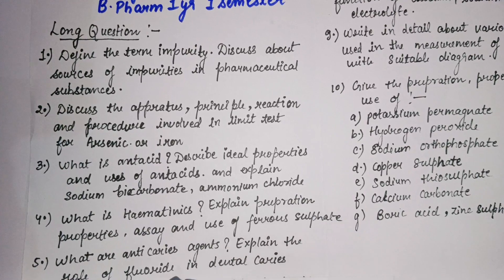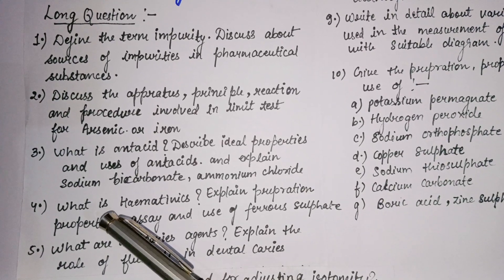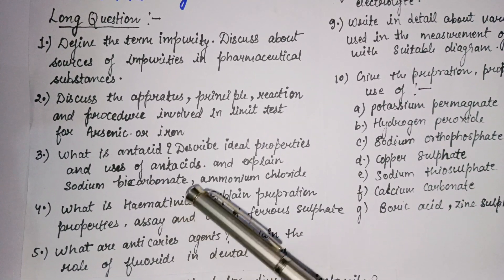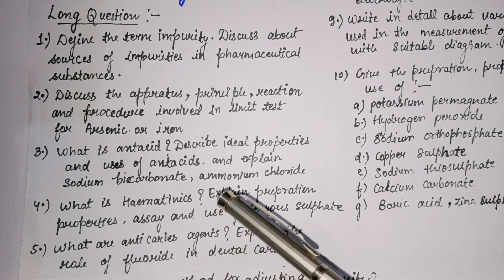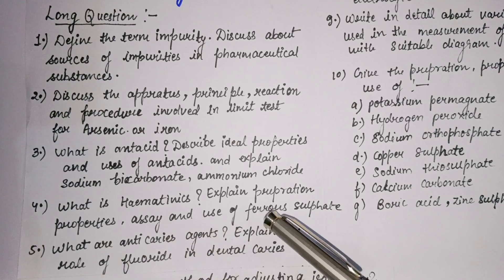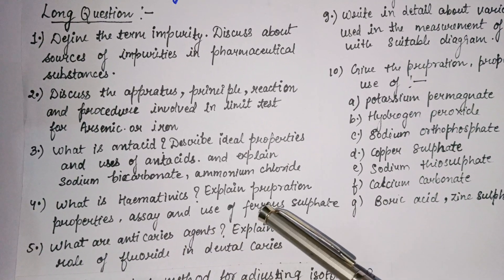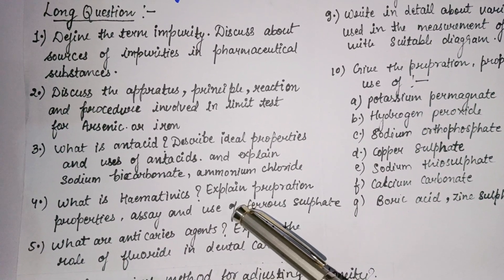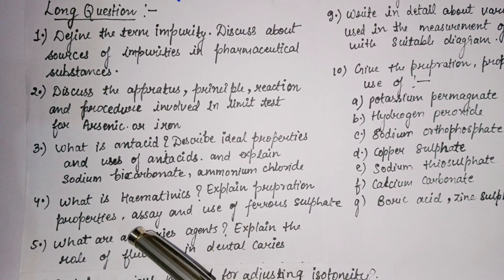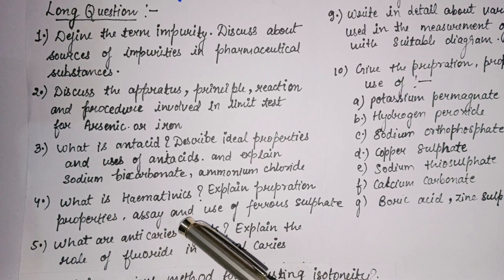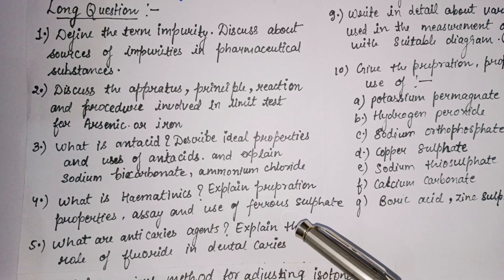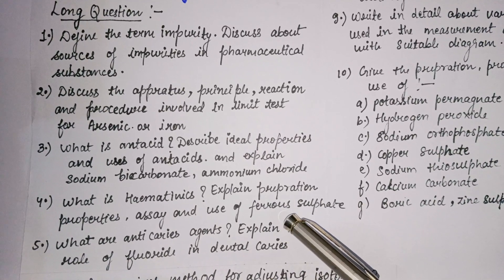The fourth question: what is a hematinic? Explain the preparation, properties, and uses of ferrous sulfate. We need to cover the preparation, properties — including form, nature, order, taste, color, storage, stability, and chemical formula of ferrous sulfate.